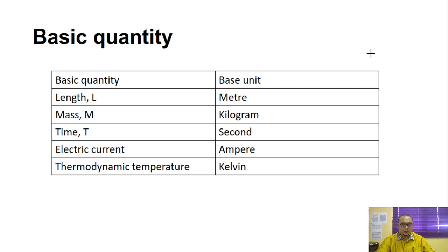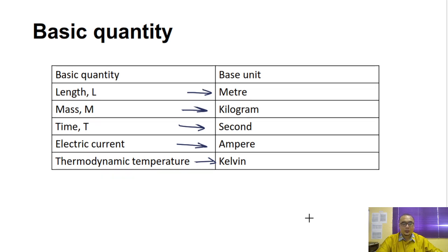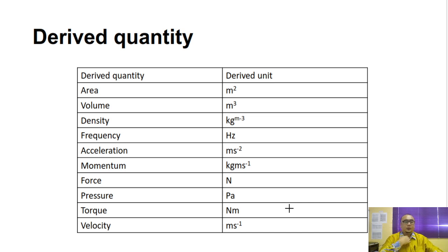So these are the basic quantities. Kalau length, saya dah bagitahu tadi, kalau length kebiasaannya ataupun SI unit dia adalah meter. Kalau mass, SI unit dia adalah kilogram. Time, SI unit dia adalah second. Electric current, SI unit dia adalah ampere. Dan thermodynamic temperature is Kelvin. Saya tahu you all memang dah familiar dengan unit-unit tersebut. So ini daripada basic unit tadi, dia akan jadi derived quantity. For example, area kita tahu, area length times length. That's why kita dapat meter squared. Kalau volume, dia akan jadi meter cubed. Density is kilogram per meter cubed. Kemudian frequency is hertz, acceleration is meter per second squared. And then, oh, kat sini ada kesilapan sikit ni. Sepatutnya kilogram per meter cubed. Kemudian force is Newton. Pressure is Pascal. Torque is Newton meter. Velocity is meter per second.